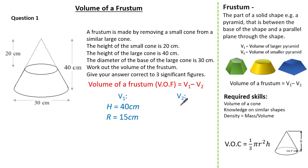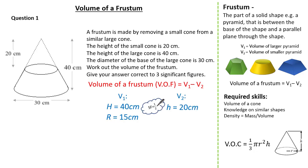Now let's look at the dimensions for our smaller cone. We know the height of our smaller cone is 20 cm, but we do not know the radius. However, we know these shapes are similar, so we can identify our scale factor. The height of our larger cone is 40 cm and the height of our smaller cone is 20 cm, therefore the scale factor is one-half. So if the radius of our larger cone is 15 cm, the radius of our smaller cone is 7.5 cm.